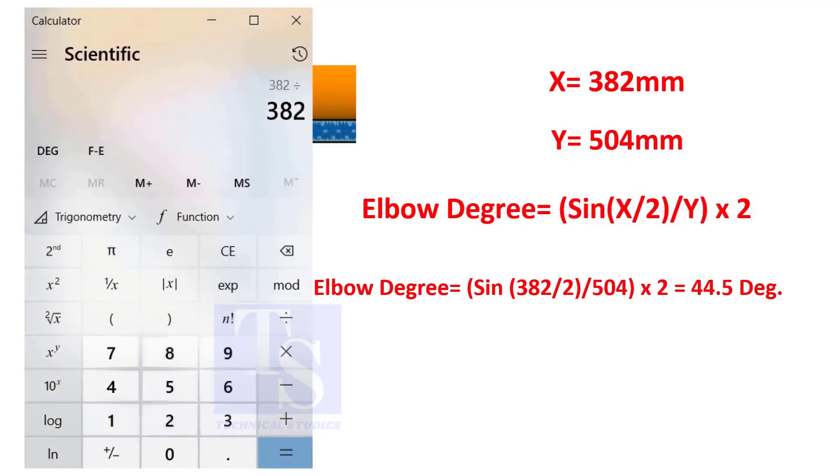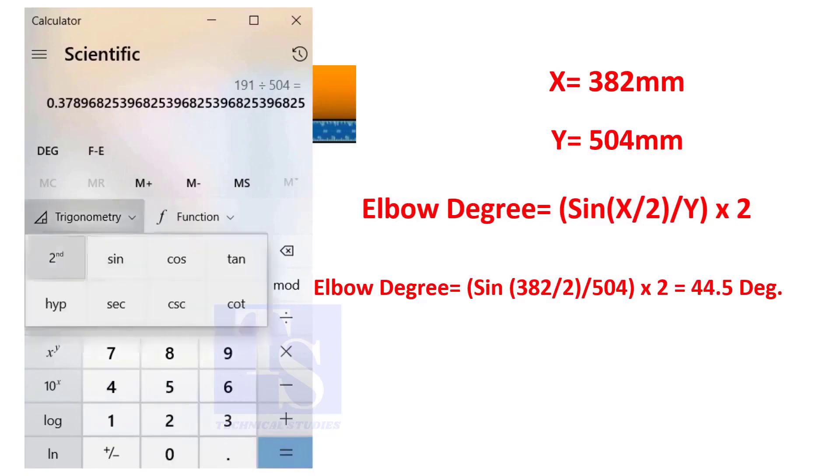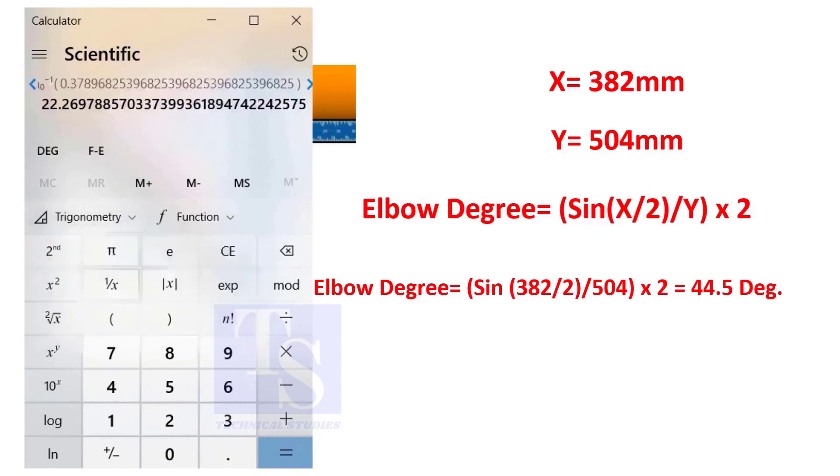You can try this method on pipe spools to measure the distortion due to welding. So, the degree of the elbow is 44.5.